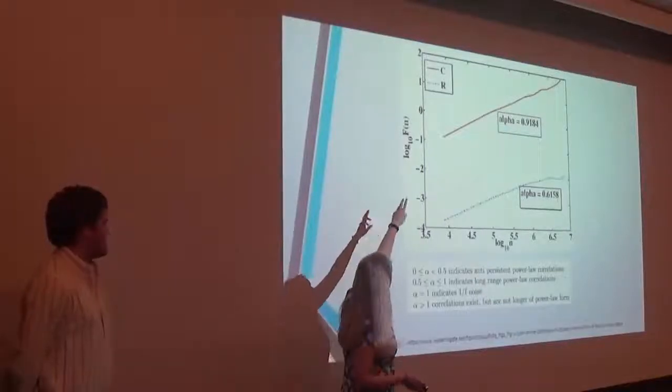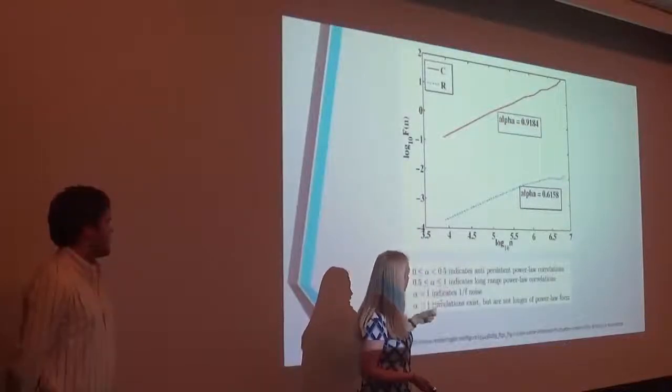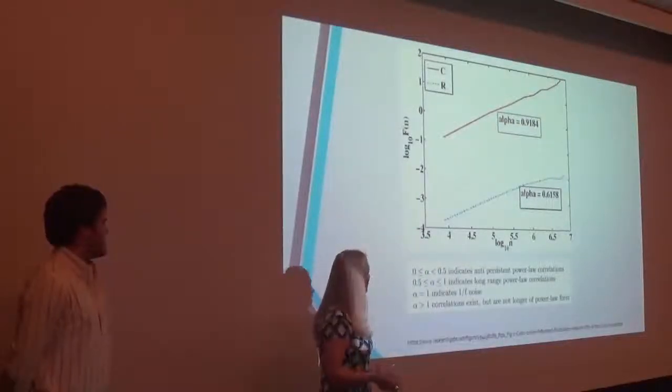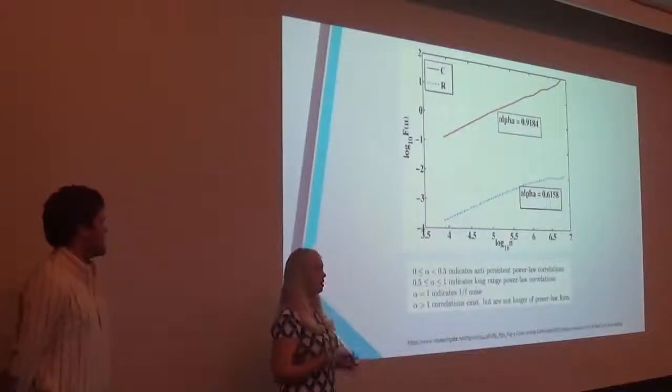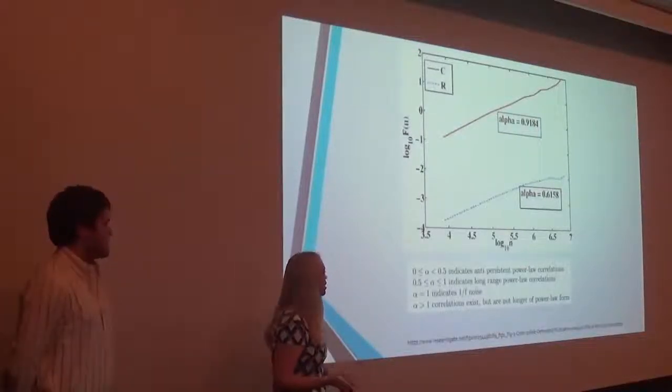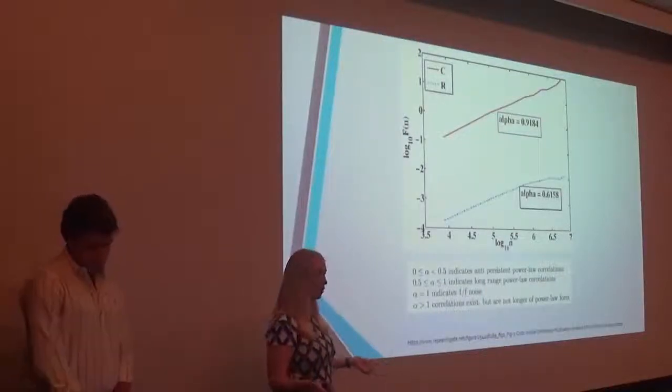And so here you can see data C has a slope of 0.9184, and data R has a slope of 0.6158, and these slopes tell us something. So a slope of 0 to 0.5 says that there's some sort of non-consistent power law correlation, and then a slope from 0.5 to 1 indicates that there's a long-range power law correlation, which is kind of what we're looking for.